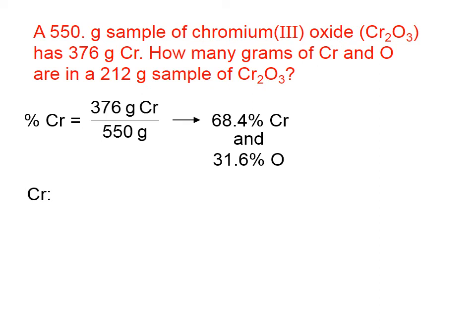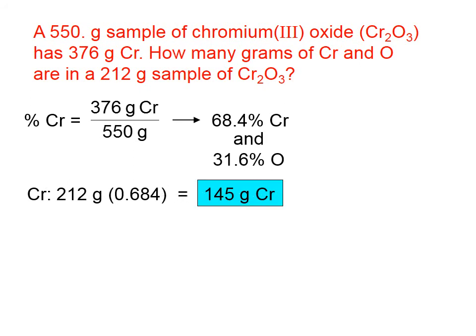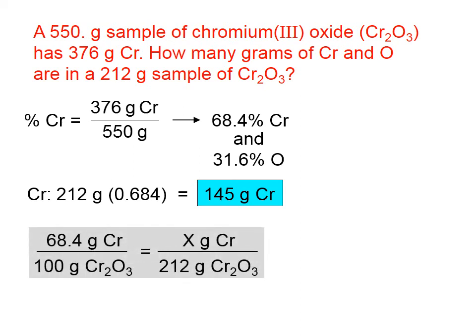Now let's calculate grams of chromium and oxygen in the 212 gram sample of chromium 3 oxide. The key, again, is that the percentages stay the same regardless of sample size — 550 gram or 212 gram sample, it's always 68.4% chromium. So in 212 grams of chromium 3 oxide, 145 of those grams are chromium. Using a proportion: in every 100 grams of Cr2O3, there are 68.4 grams of chromium, so in 212 grams you get exactly 145 grams of chromium.